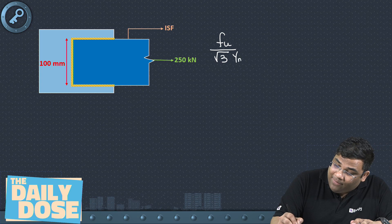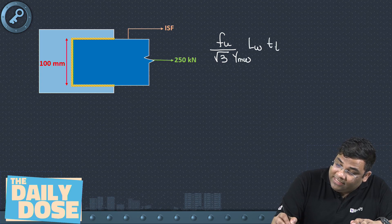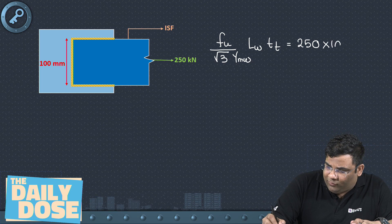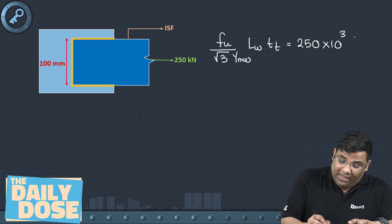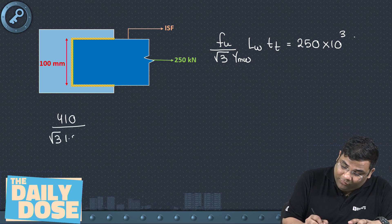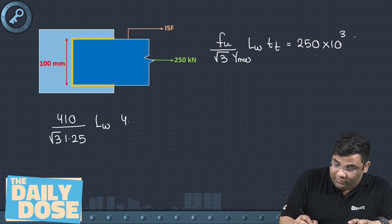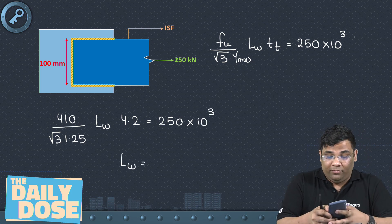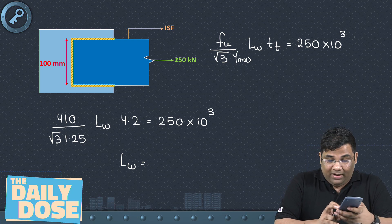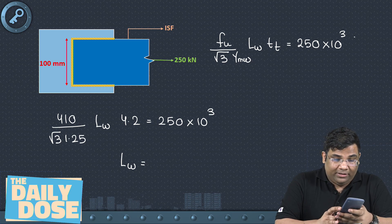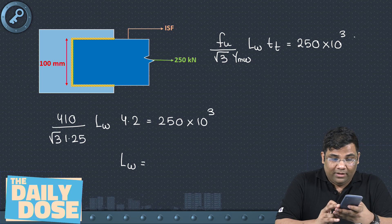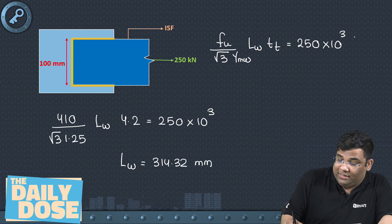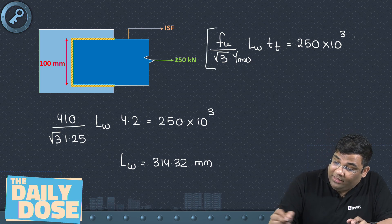Applying the formula: (fu / (√3 × γmw)) × lw × throat thickness = 250 kN. Substituting fu = 410, γmw = 1.25, and throat thickness = 4.2 mm: lw = (250 × 10³ × √3 × 1.25) / (410 × 4.2), giving lw = 314.32 mm as the total length of fillet weld.